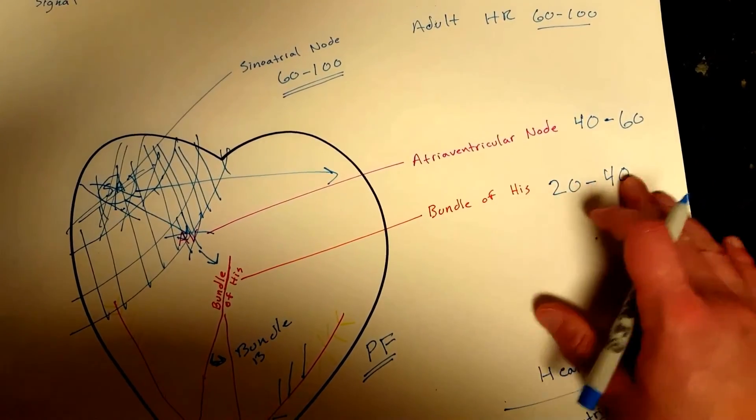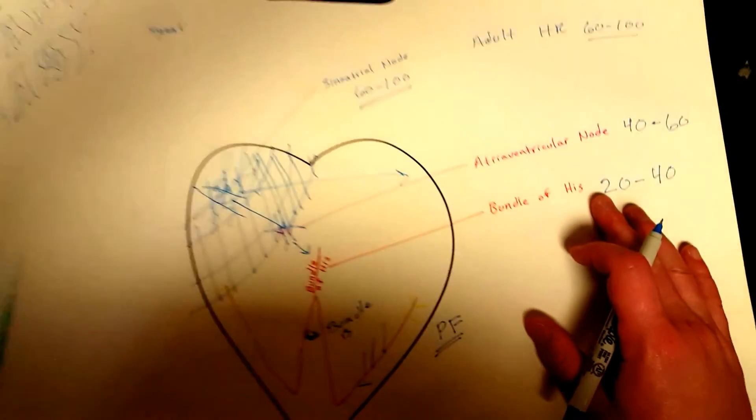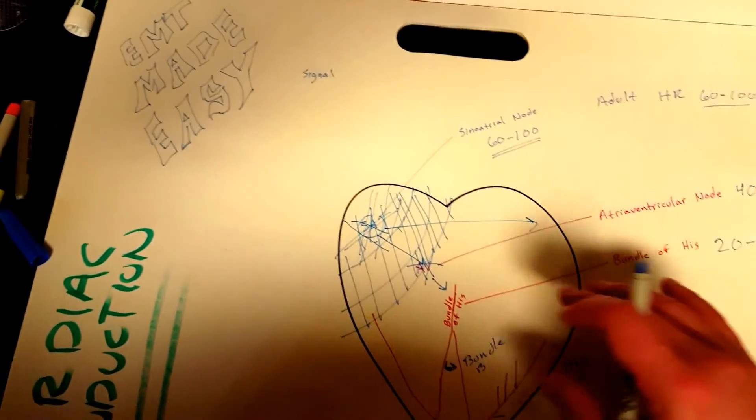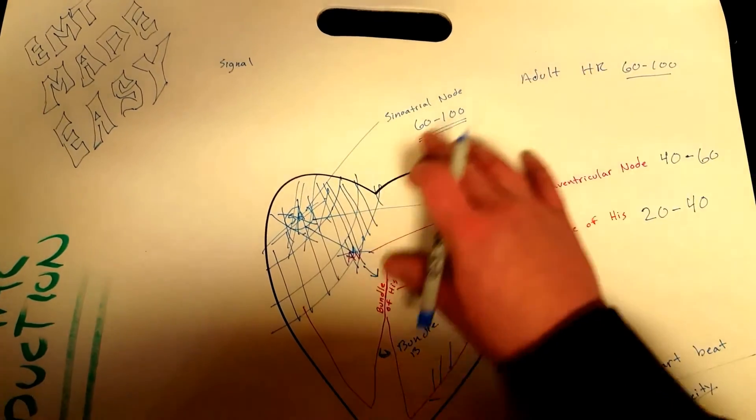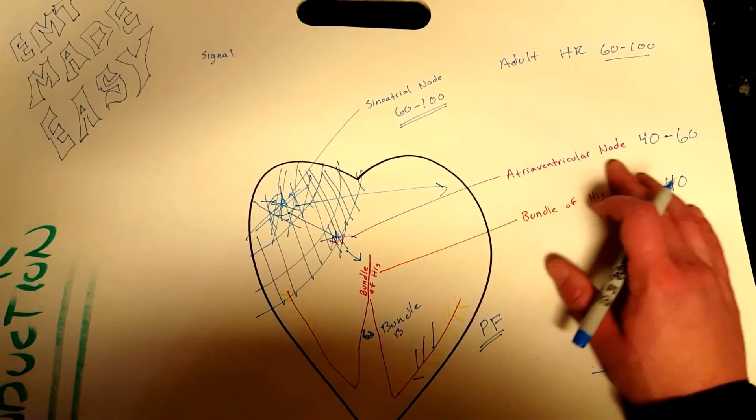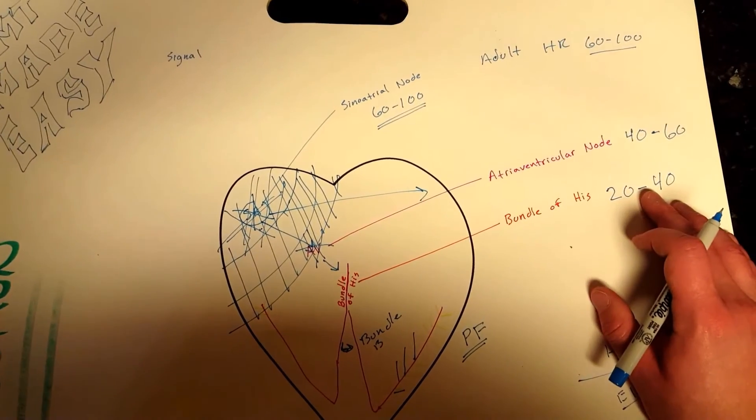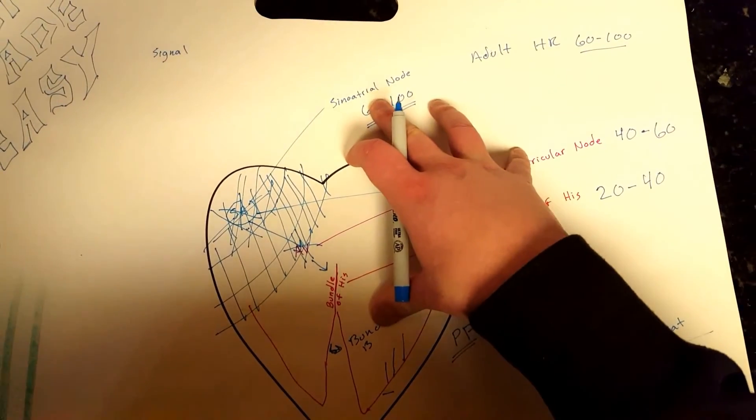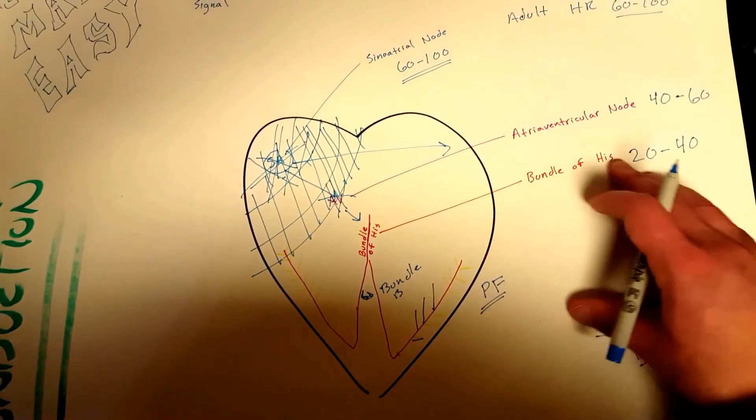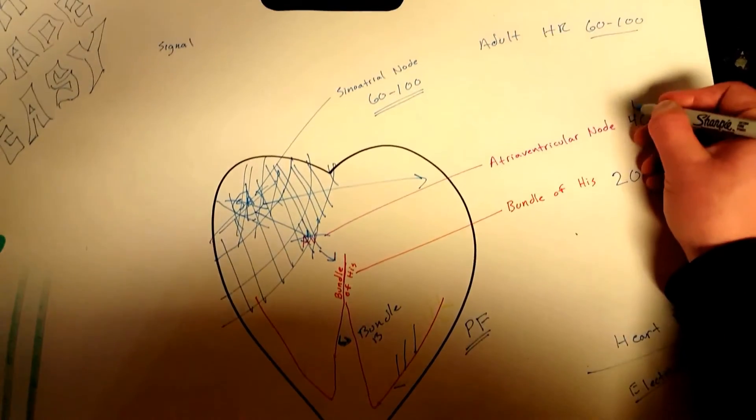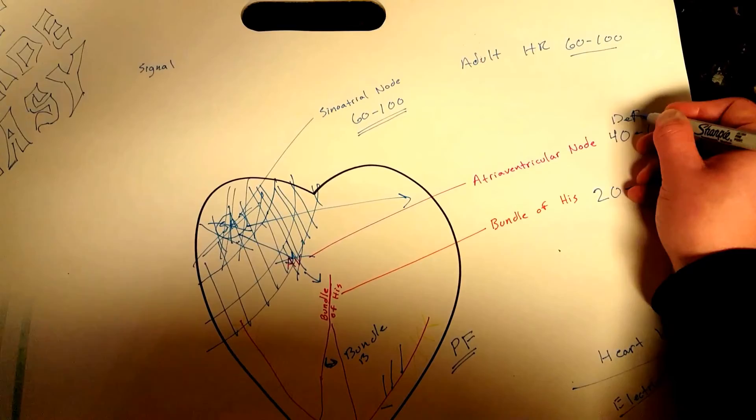That's pretty much it for this video. I just wanted to go over the conduction and the default rates for your sinoatrial node, your atrioventricular node, and your bundle of His. These might come up in a chapter and it's good to just know about these, know what their default rate is. This is the default rate for these. Default, that means it's automatic.